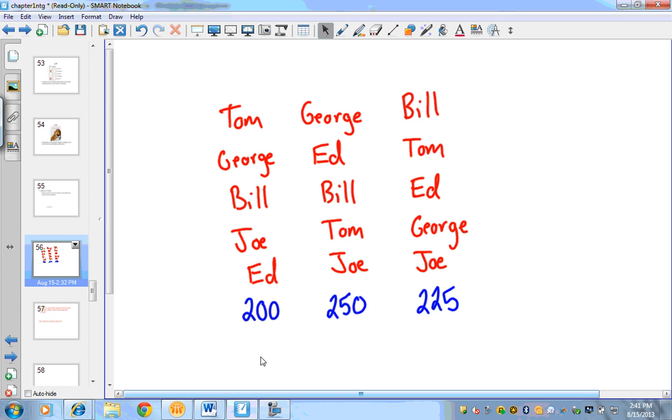Okay, this is our last problem here. And so I just decided to change it up and now it's a preference schedule amongst Tom, George, Bill, Joe, and Ed. Alright, so what we're going to do is we are going to select our approval here. And I'm just going to say everybody approves of their first, their third, and then their last categories.